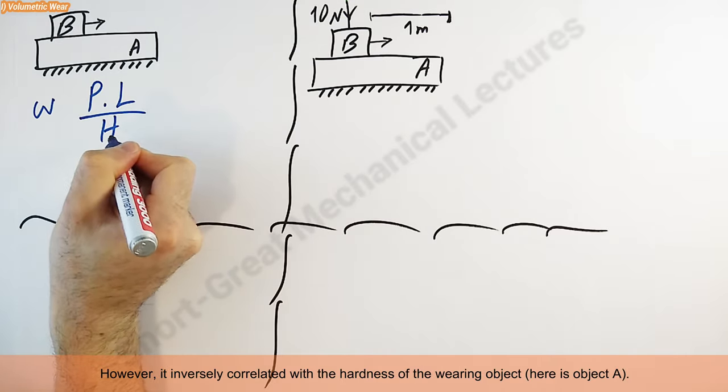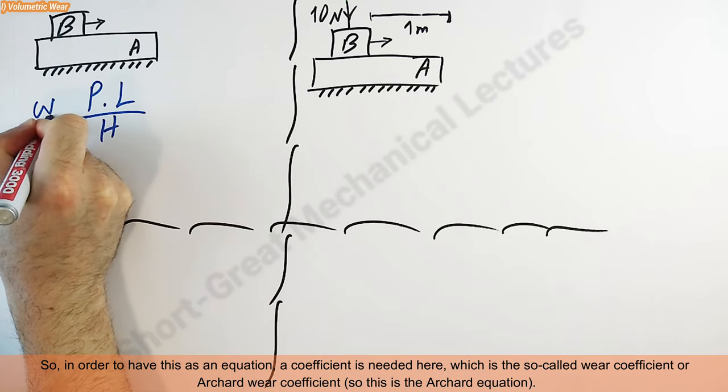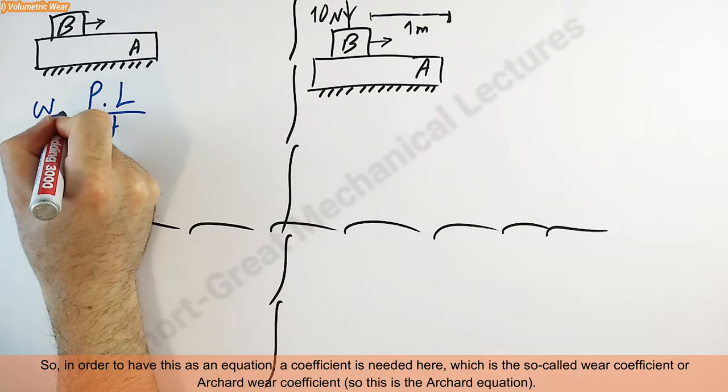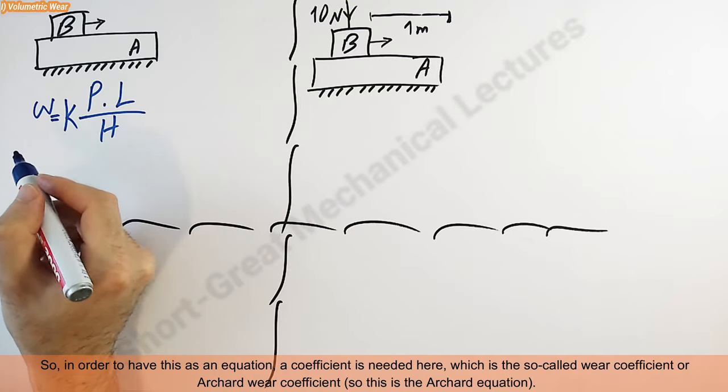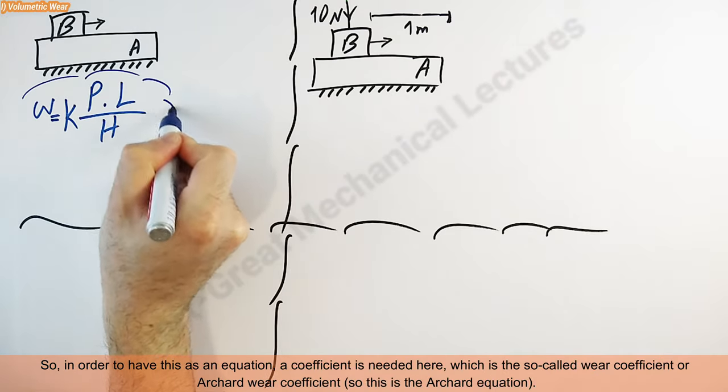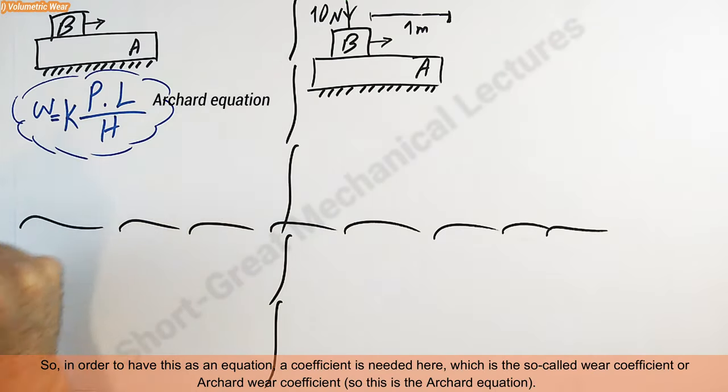Here is object A. In order to have this as an equation, a coefficient is needed here, which is the so-called wear coefficient or Archard wear coefficient. So this is the Archard equation.